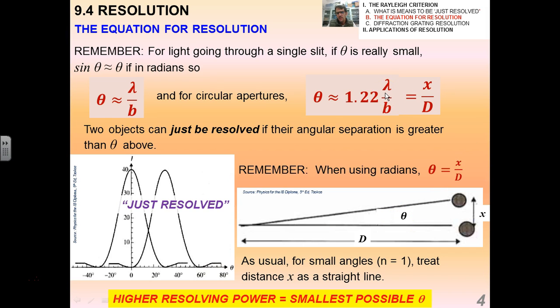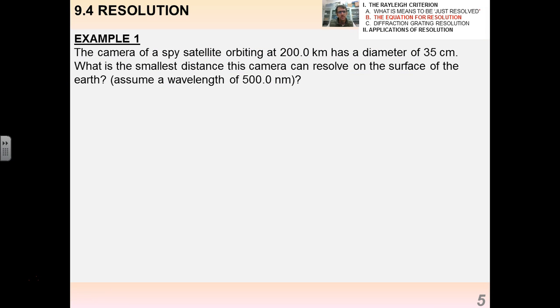In reality how we're going to solve these problems is we're going to equate x over d equals 1.22 lambda over b. I'll do a couple examples for you like this one. The camera of a spy satellite orbiting 200 kilometers has a diameter of 35 centimeters. What's the smallest distance this camera can resolve on the surface of the earth? We assume an average wavelength of 500 nanometers. First thing I always do is I draw myself a picture.